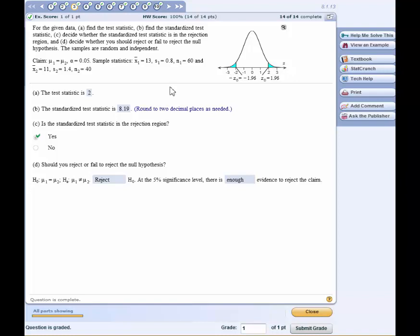Now, our standardized test statistic rounded to two decimal places is 8.19. Does that fall in the rejection zone? Well, yeah. If you think about it, 8.19 is way over here somewhere.